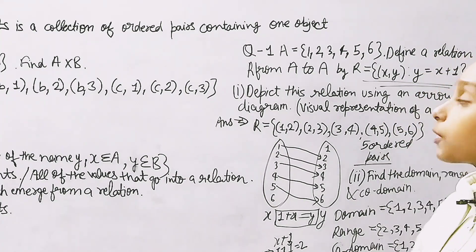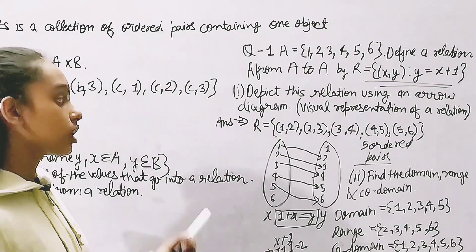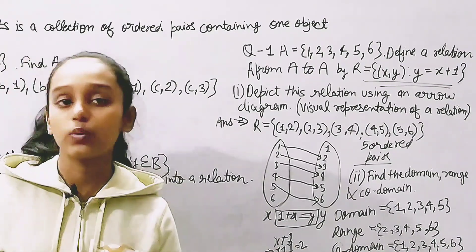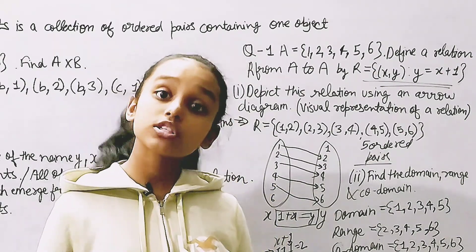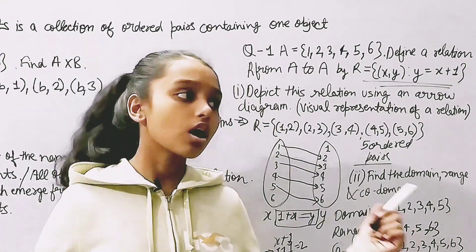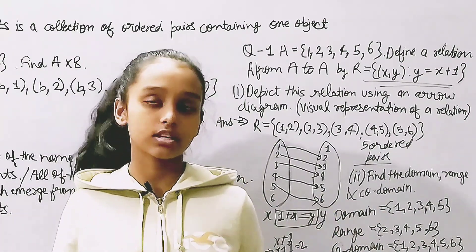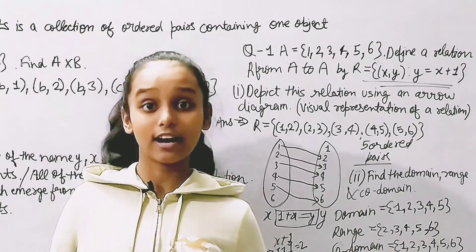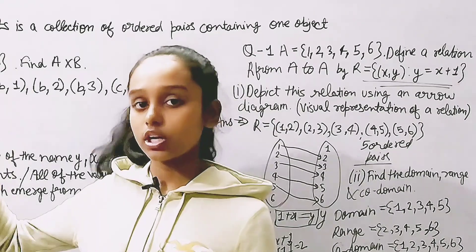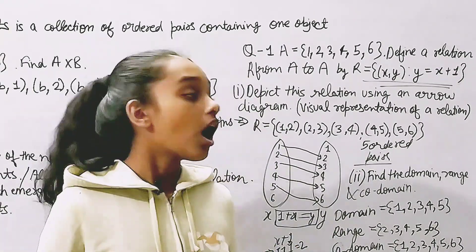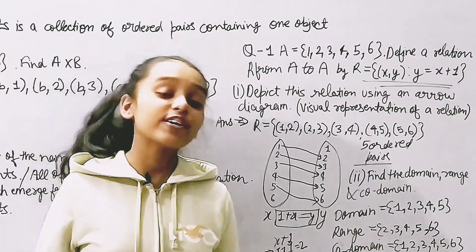I hope you've understood everything and the question is clear. In this video we discussed relations, arrow diagrams, domain, range, and codomain with examples. In the next video we'll be continuing with this topic. Thanks for watching and have a great day.